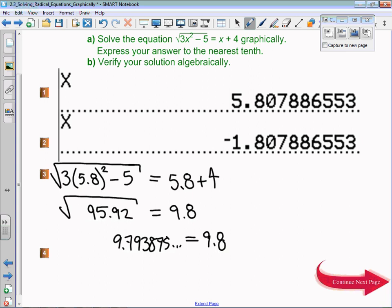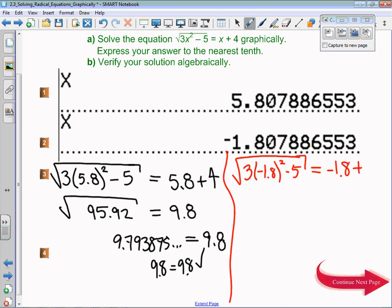We got two answers so we have to do two verifications. I'm going to check if the square root of three times negative 1.8 squared minus five is equal to negative 1.8 plus four. Negative 1.8 plus four ends up being 2.2.